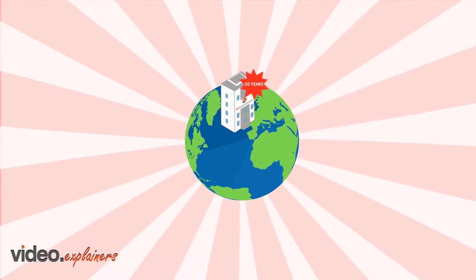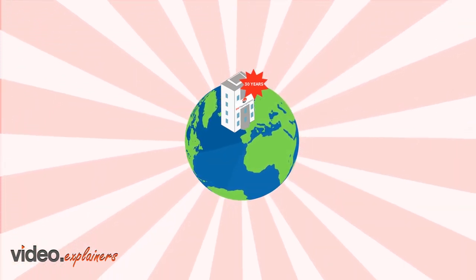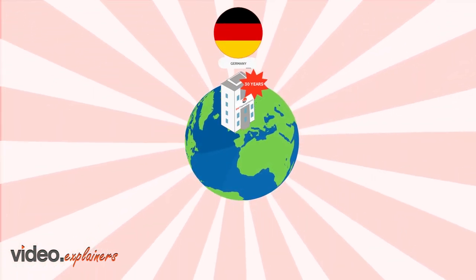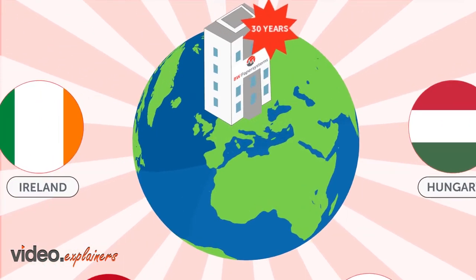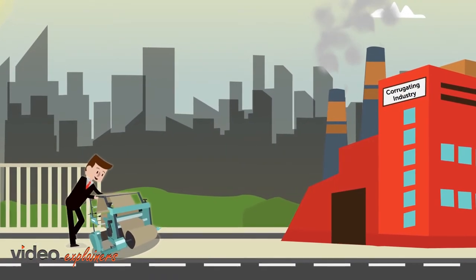For 30 years, BW Paper Systems has been present in the EMEA region, with facilities in Germany, Hungary, Italy, Spain and Ireland, providing equipment for the corrugating and converting industries.